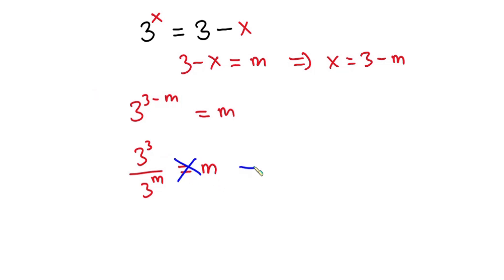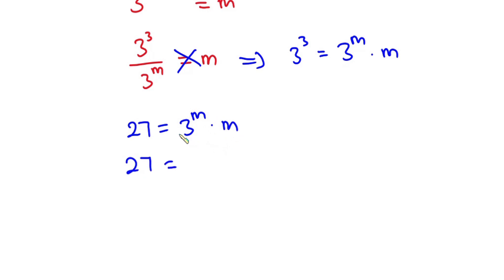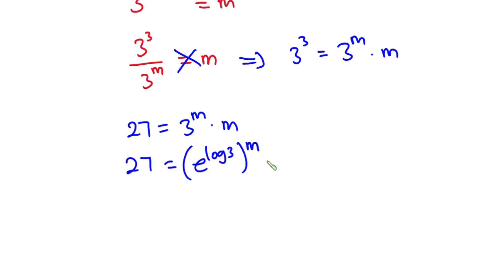Now let's cross multiply, so we have 3 to the power 3 is equal to 3 to the power m, times m. Now, 3 to the power 3 is nothing but 27, and this is equal to 3 to the power m, times m.